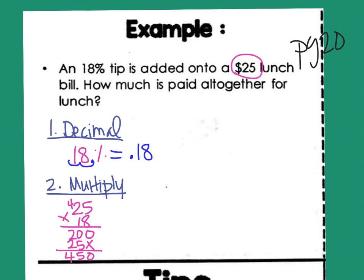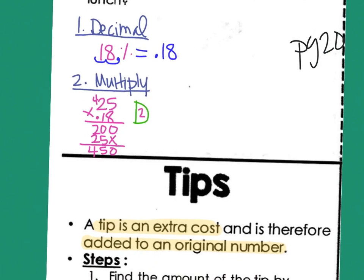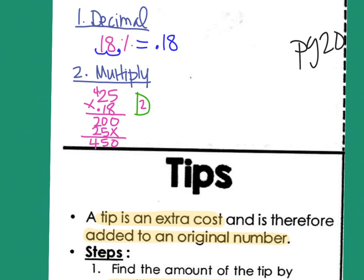Then the last thing I need to do is remember there are two digits behind the decimal. This was .18 when I was multiplying, so that means there's two digits behind the decimal. So I need to go to where the back of the number is and move a decimal point 2 times over. This is equal to the tip. $4.50 is equal to the tip.